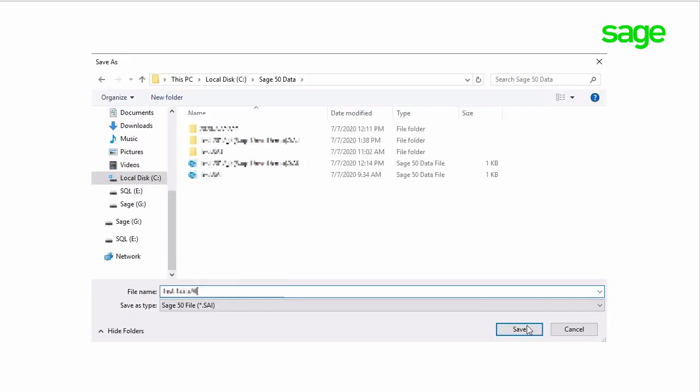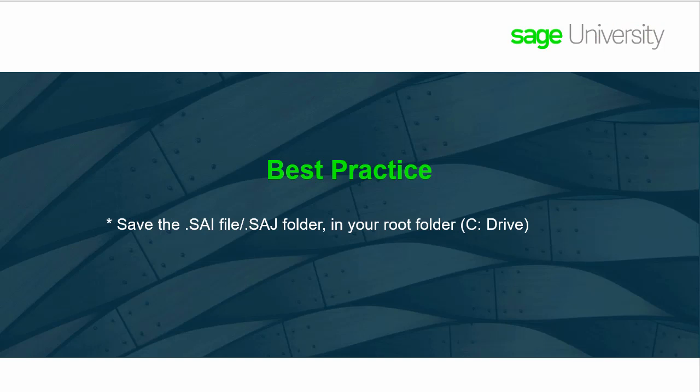You will then be prompted to save a copy of the file locally. This is the file that will communicate with the Remote Data Access service. It's very important to save the SAI or SAJ file in your root folder — your C drive. Create a Sage 50 data folder if you don't already have one. It is not recommended to save the file to another cloud service, for instance OneDrive or Dropbox that auto-syncs, as this may create duplicate or corrupted copies of the file.